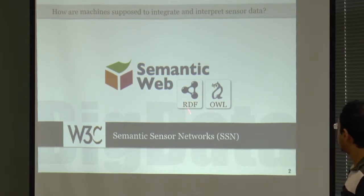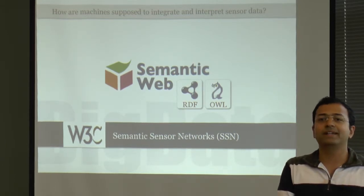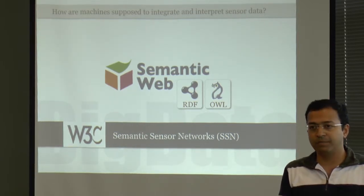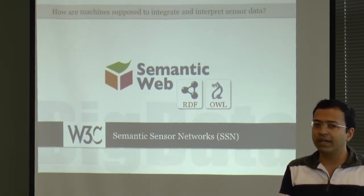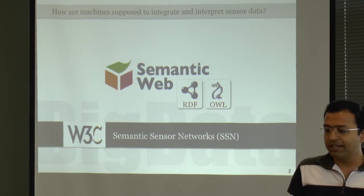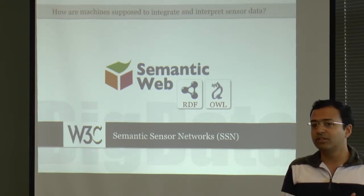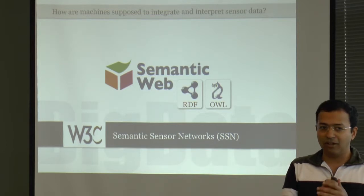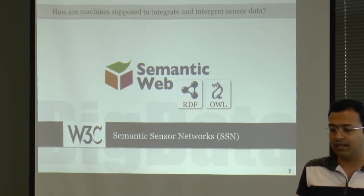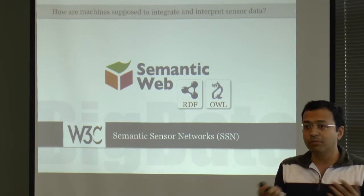You have heard of RDF and OWL, so I will not go into details of that. I'll talk about semantic sensor network ontology. A lot of sensor data is being generated — the question is, how do you make it interoperable? How do you make it easily consumable and interpretable? To give you an example, a cross-country flight from New York to Seattle would generate 270 terabytes of data. That's a lot of sensor data.